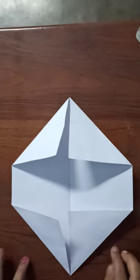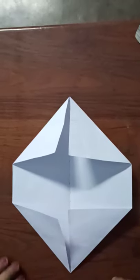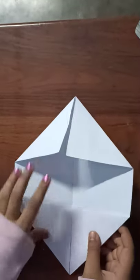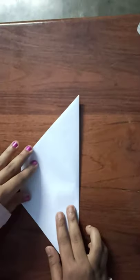Now the sheet will look like this. Now fold it again, we have to fold this paper into two parts. That means we have to make a line again this way.